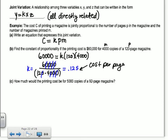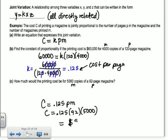Okay, so how much would the printing cost be for 5,000 copies? So that's m and p is 92. So my cost would be that constant is still the same, 0.125 times p times m. So it's 0.125 times 92 times 5,000 equals my total cost. So it works out to be 57,500.